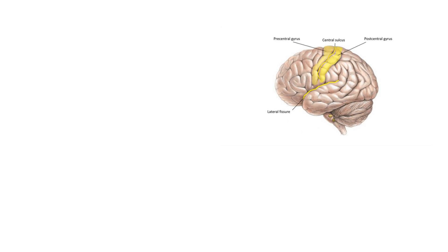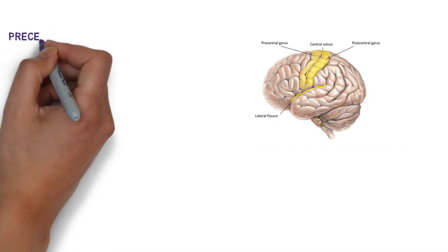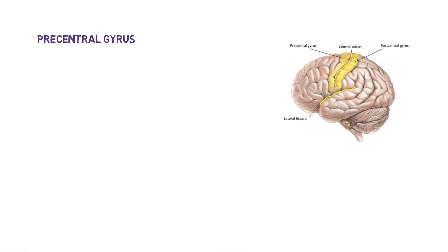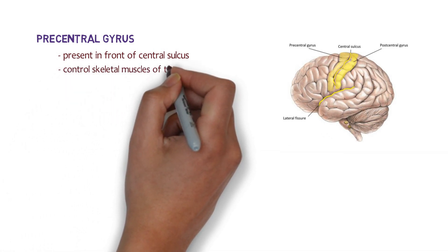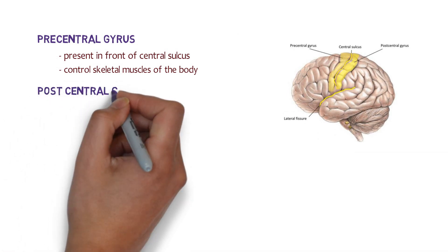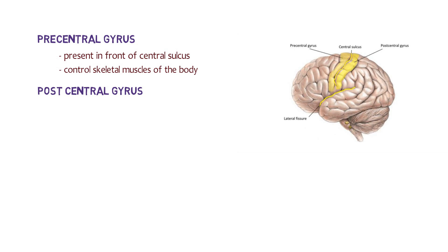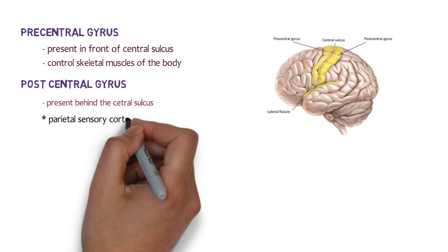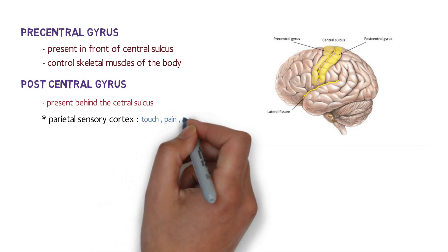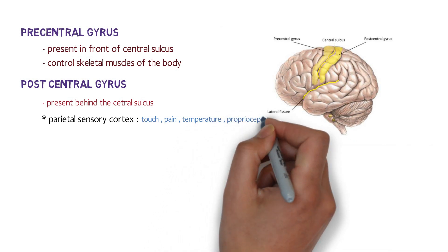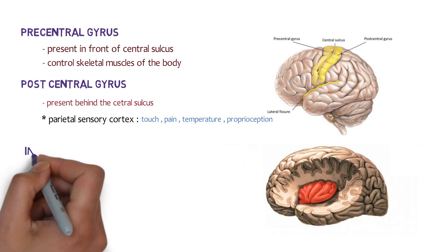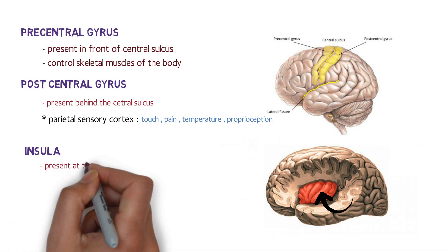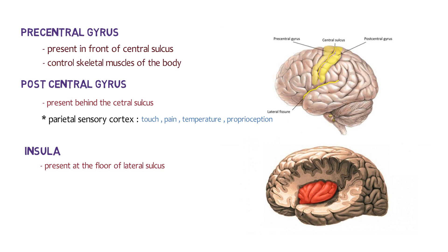The central sulcus divides two important gyri: the precentral gyrus and the postcentral gyrus. The precentral gyrus is present in front of the central sulcus and its function is to control the skeletal muscles of the body. The postcentral gyrus is behind the central sulcus; it contains the parietal sensory cortex, responsible for touch, pain, temperature, and proprioception. The insula is present at the floor of the lateral sulcus; its function involves body representation, subjective emotional experience, pain, love, emotion, addiction, and enjoyment of music.